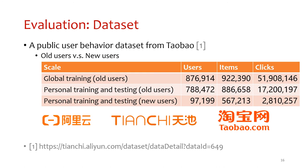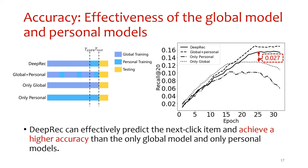To simulate the cold-start scenario where new users register after GDPR, we partition users into old users and new users by the average of 10 steps of their clicks. New users appear after the GDPR deadline, and their clicks can only be used to train their personal modules. All users' clicks are used to train both the global module and their personal modules. We partition the whole procedure into three phases: global training, personal training, and testing.